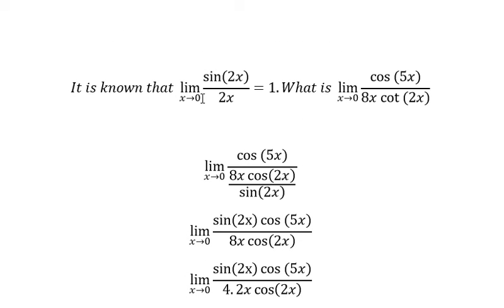Next, we know that limit x approach to number zero sine of 2x over 2x you got about number one.